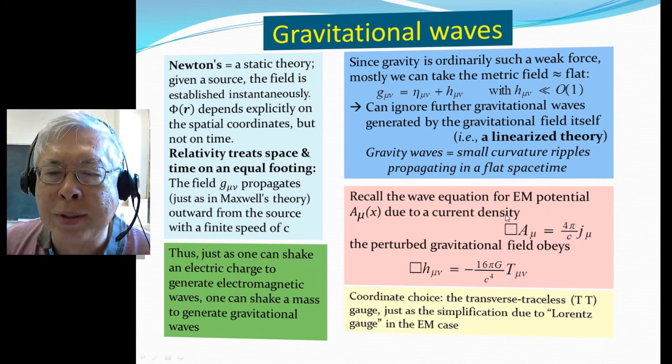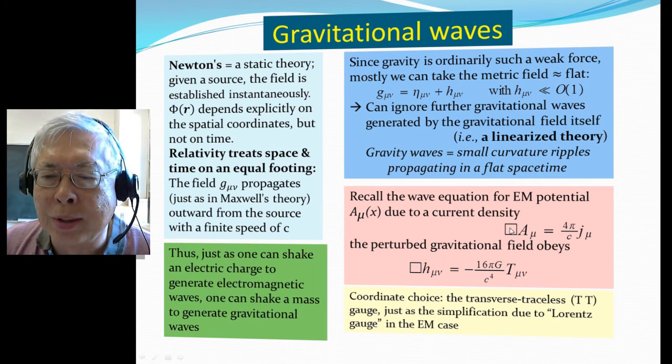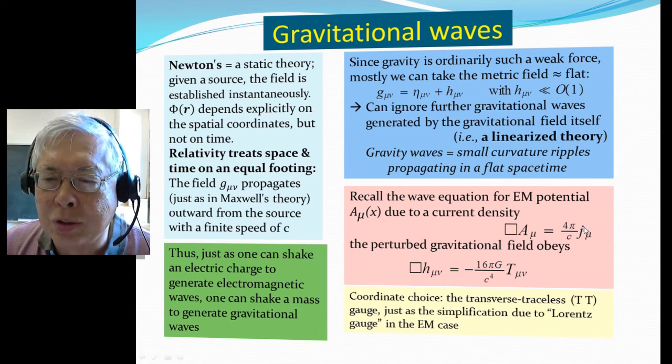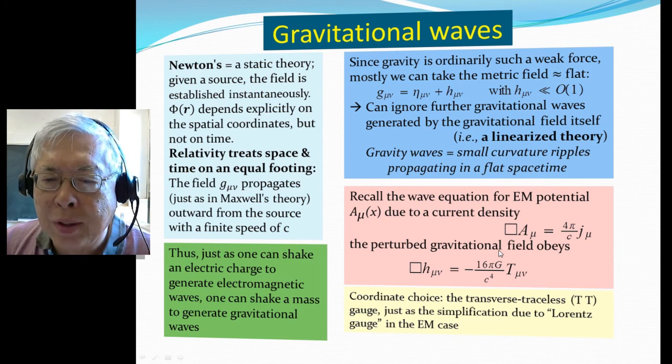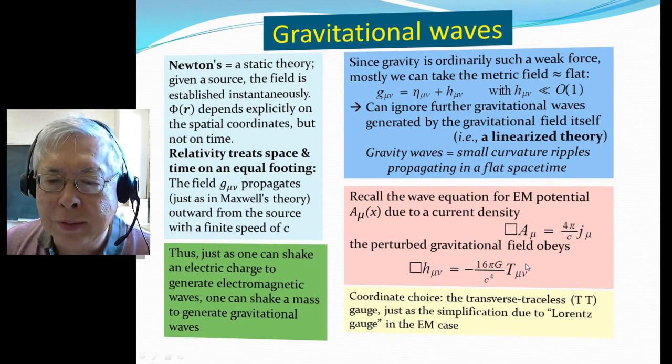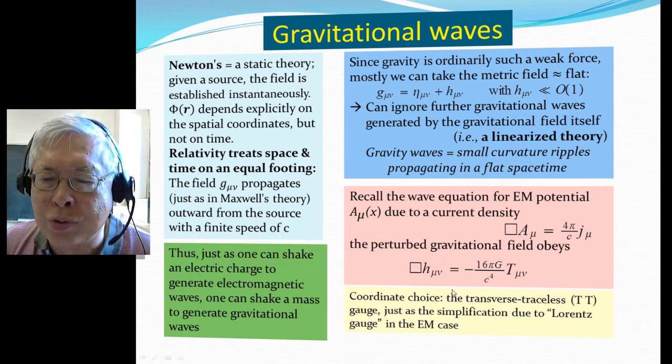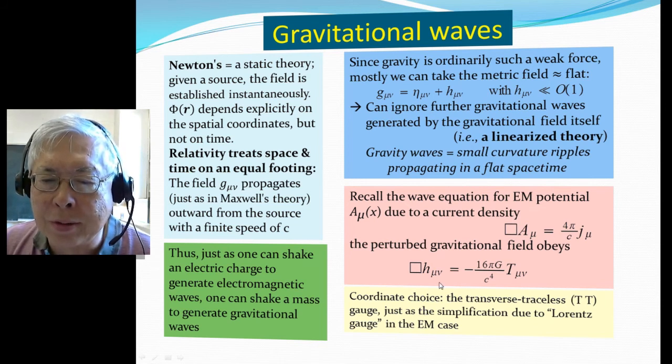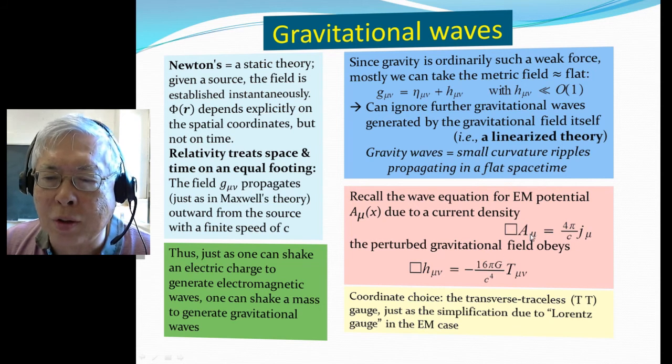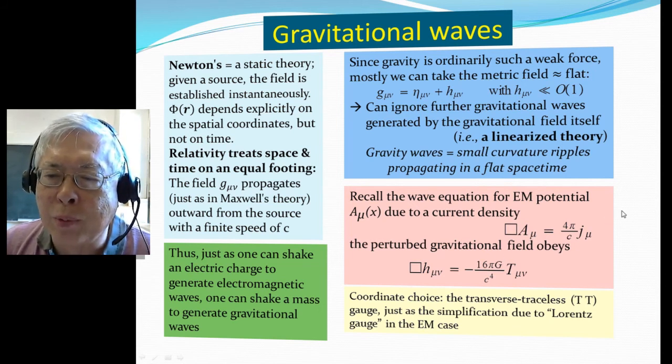Remember the wave equation for electromagnetic potential A_μ due to a current density can be written this way: d'Alembertian acting on the potential equals the charge current. For perturbed gravitational waves, it obeys a very similar equation: d'Alembertian acting on the h-field equals T_μν. When we wrote down the electromagnetic potential case, we made a choice called Lorentz gauge. Similarly here, we have made a coordinate choice called the transverse traceless gauge.